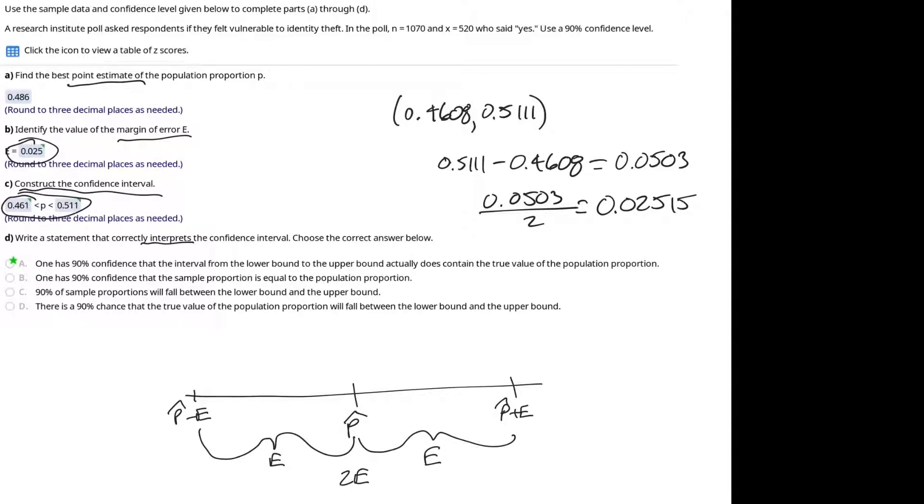Now we should write a statement that correctly interprets the confidence interval. The purpose of a confidence interval is to try to establish a range of values that would capture the population parameter that is being estimated.